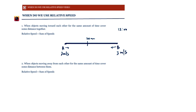We add their speeds because think about it: at what rate are they covering the 20 meters between them? A is covering 2 meters every second, and at the same time B is covering 3 meters in that same second. Together they are covering a total of 5 meters every second. That is why we add their speeds — this is the relative speed — and the time taken to meet is 20 divided by 5, because they are both moving simultaneously.